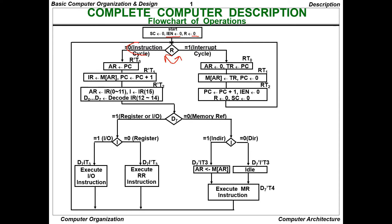The instruction cycle consists of fetch, decode, execute, and store — a cyclic process going from fetch to decode, decode to execute, execute to store, and store back to fetch. At the first level, that is R-dash-T0, the program counter points to the address register. As we know, the program counter always points to the current instruction.